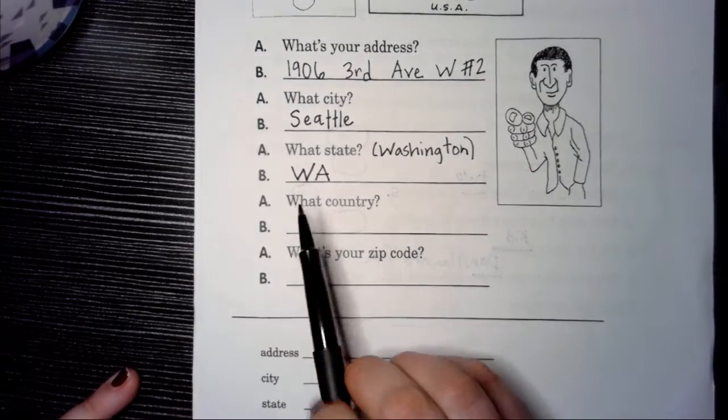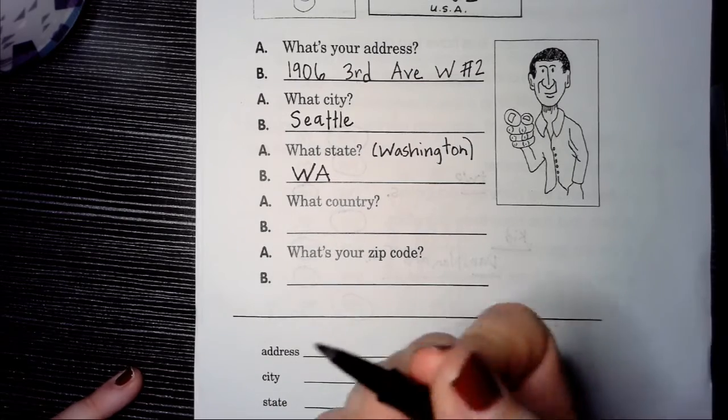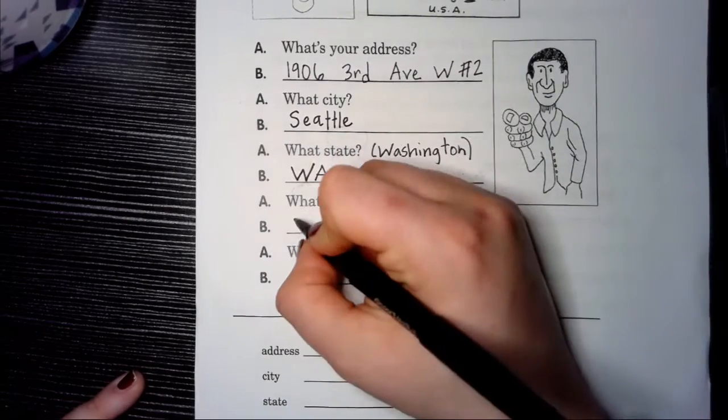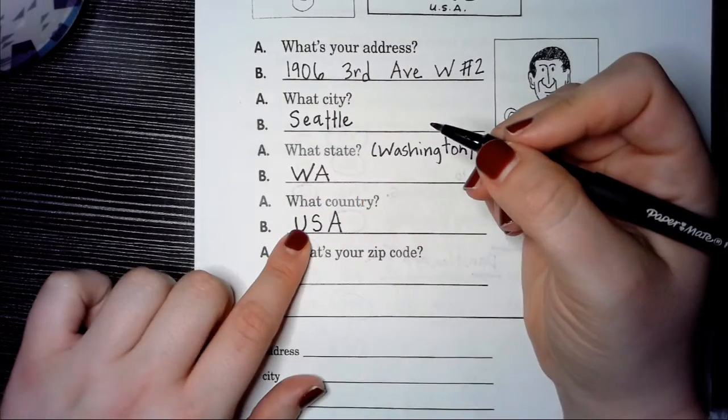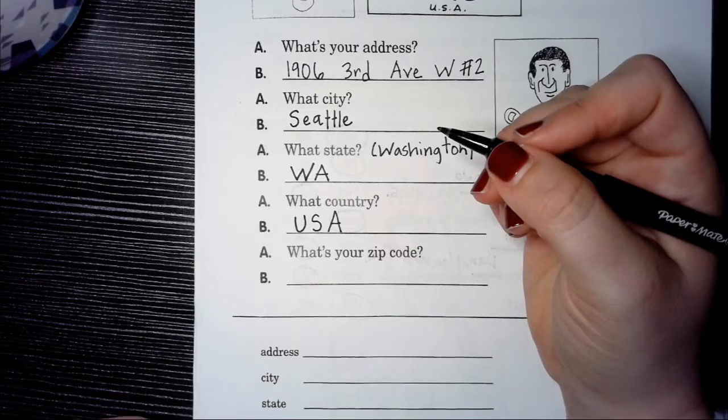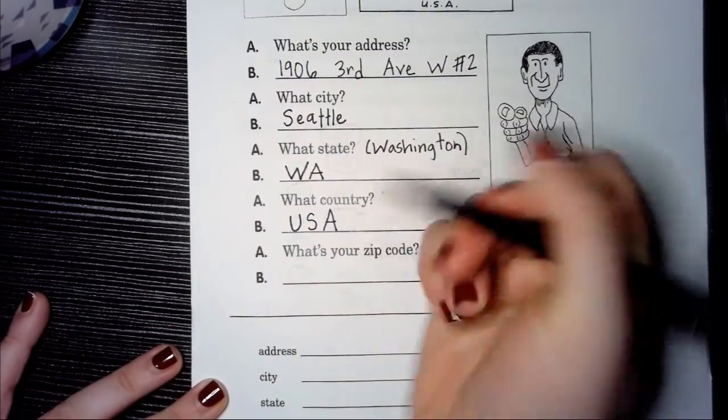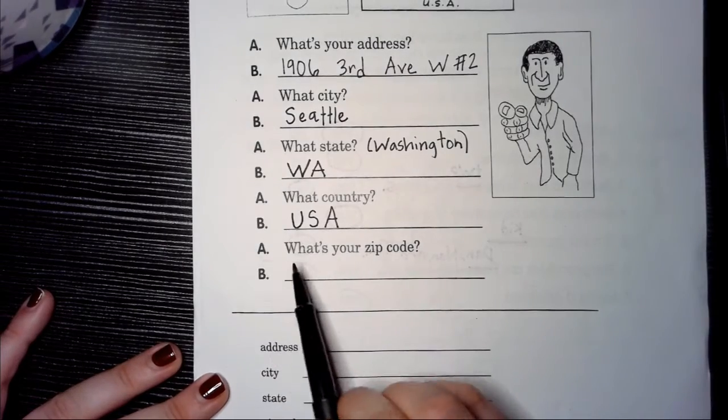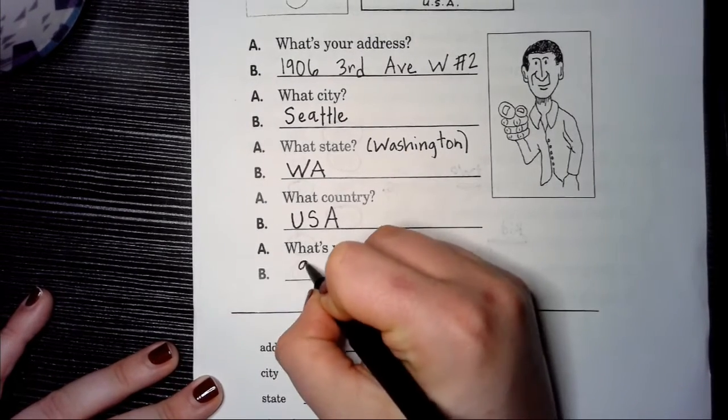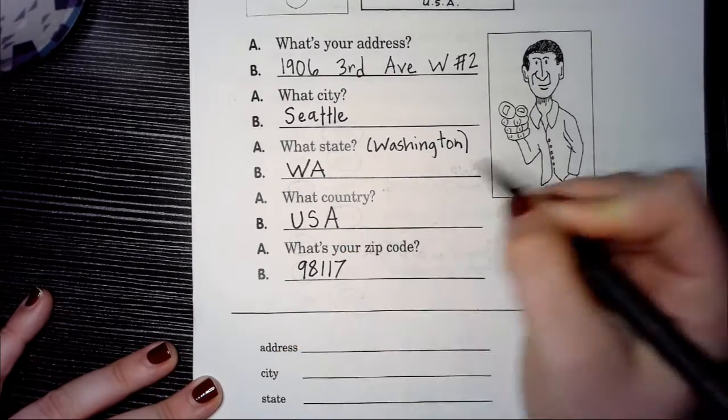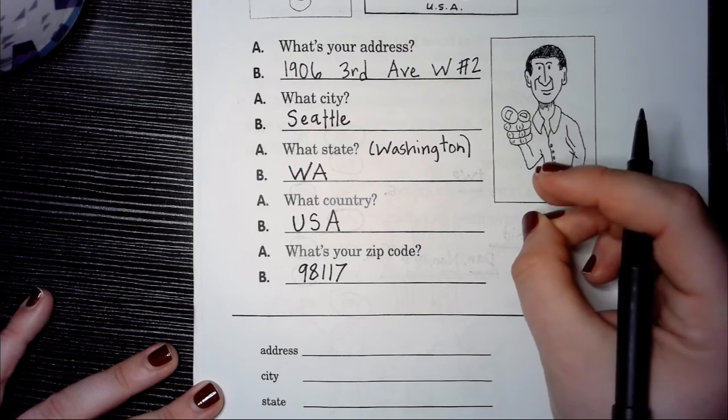A: What country? What country are we in? America. It's easiest to write just USA, United States of America. Normally you don't need this but it's good to know. Finally, A: What's your zip code? For me it is 98117. I think for most of you it is 98168, right?